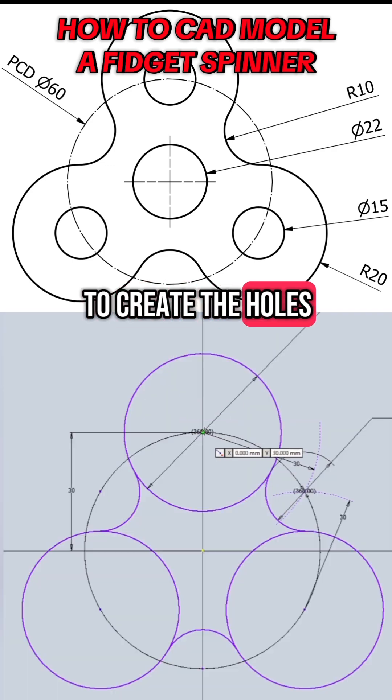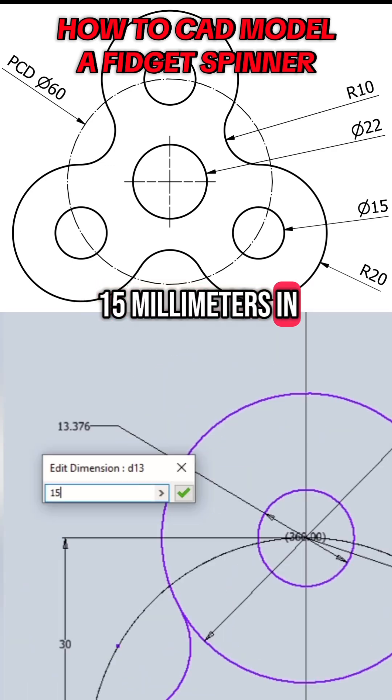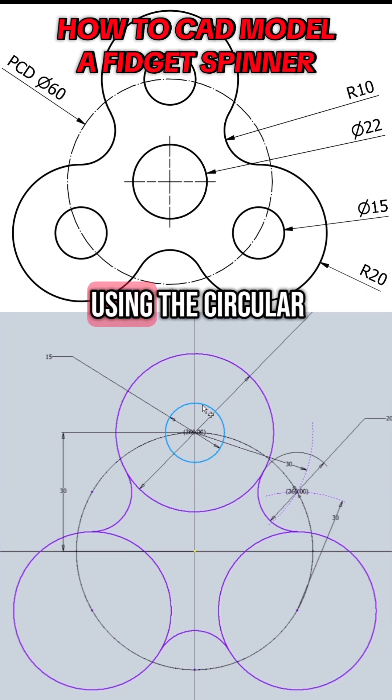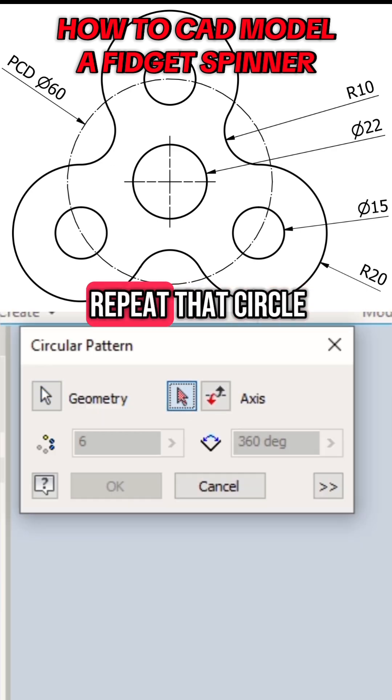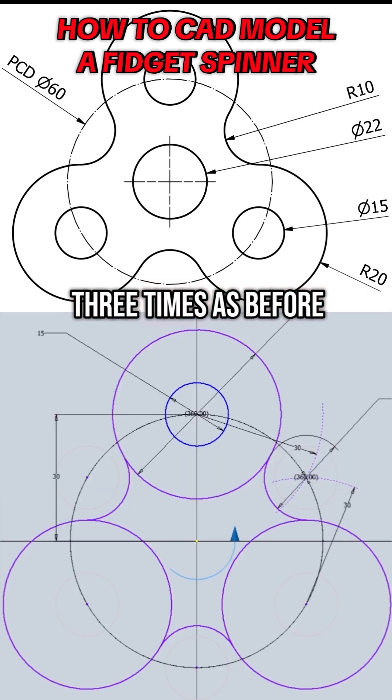We now need to create the holes. Sketch a circle 15 millimeters in diameter in this position. Using the circular pattern tool to repeat that circle three times as before.